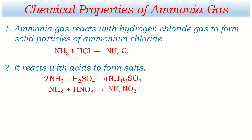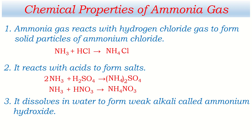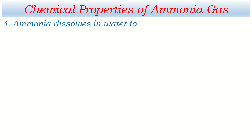Now let's go to the third important property. Ammonia dissolves in water to form a weak alkali called ammonium hydroxide. It reacts with water to form ammonium hydroxide. The balanced chemical equation is: NH3 + H2O → NH4OH. Checking: Hydrogen 1 + 4 = 5, and 3 + 2 = 5; Oxygen 1 = Oxygen 1; Nitrogen 1 = Nitrogen 1.